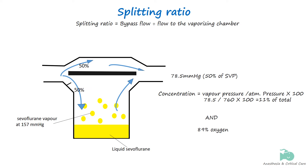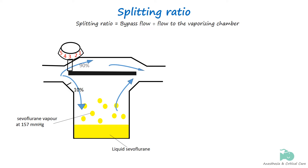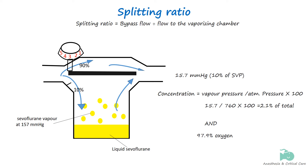This is known as adjusting the splitting ratio, and the dial or knob on top of the vaporizer does it. So if we have 10 percent fresh oxygen entering the vaporizing chamber, the resultant fresh gas will have 10 percent of the SVP in it. For sevoflurane, this would be about 2.1 percent, which is 1 MAC for sevoflurane.